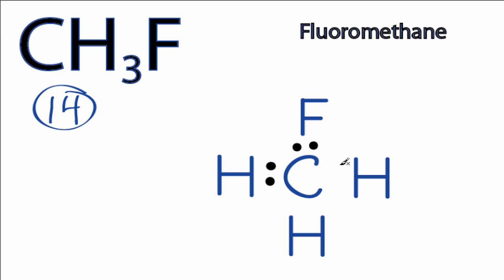We'll put 2 between atoms to form chemical bonds. We've used 8, and then around the fluorine to fill its octet. So we have 8, 10, 12, and 14.